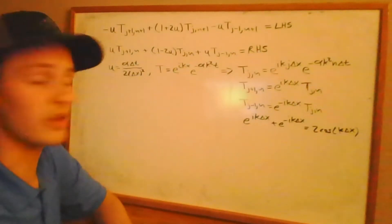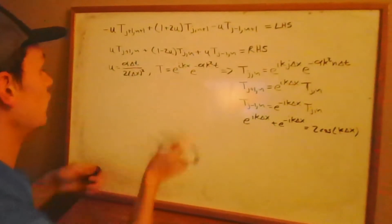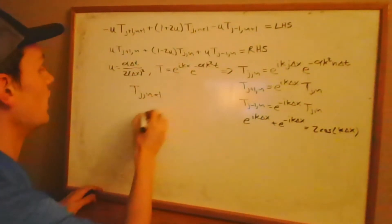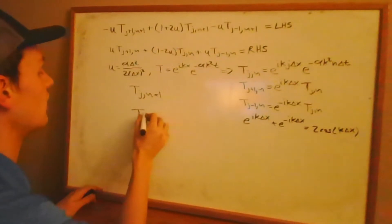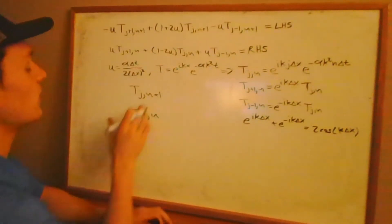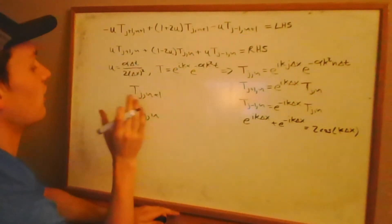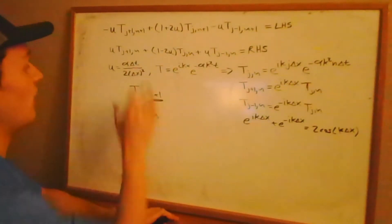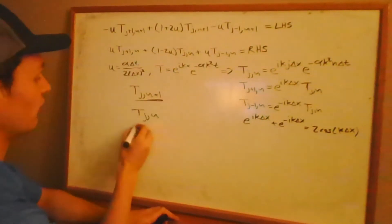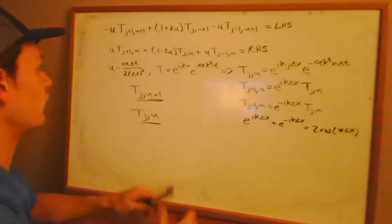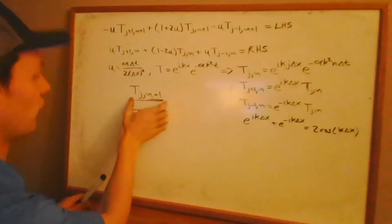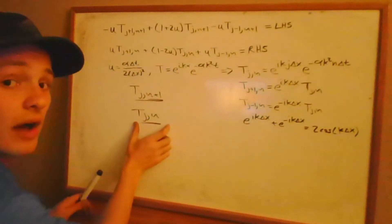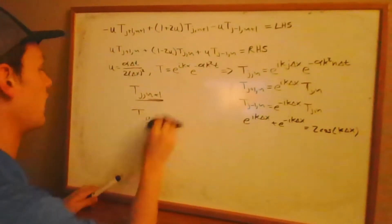We're going to use the equations we have over here to find the relationship between T sub j,n+1 and T sub j,n. This means we want to get the left-hand side in terms of T_{j,n+1} and the right-hand side in terms of T_{j,n}. If we do that, T_{j,n+1} will be factored out on the left-hand side and T_{j,n} will be factored out on the right-hand side.